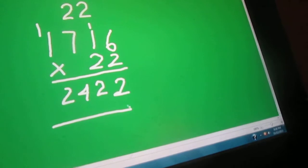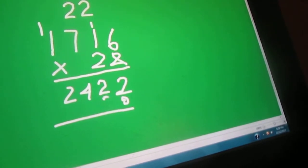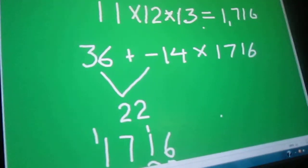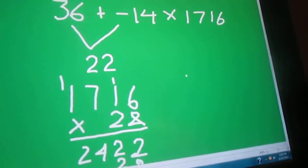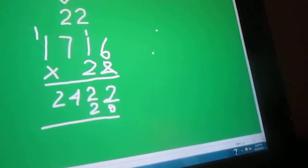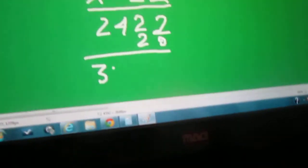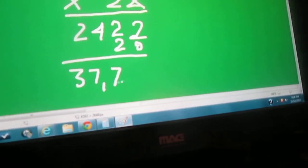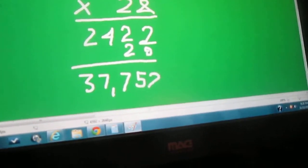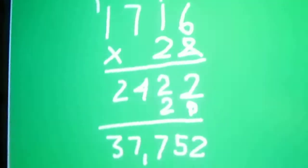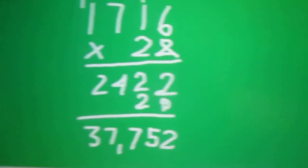So your answer for 22 times 1,716 is 37,752. There you have it, math problems using the 11, 12, 13 date formula. This is Professor Peter and Professor Grover, have a good night.